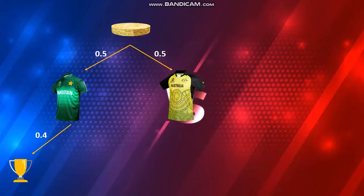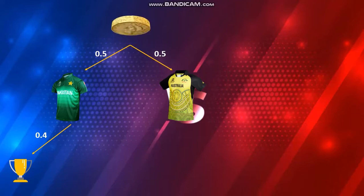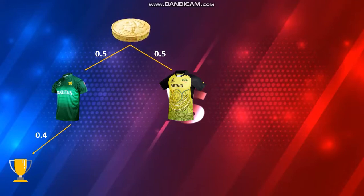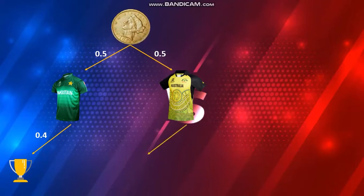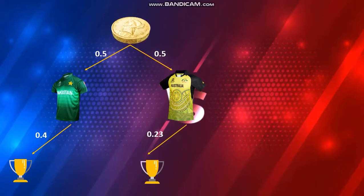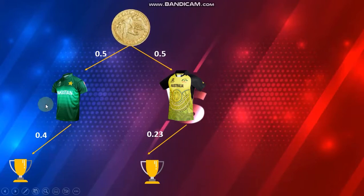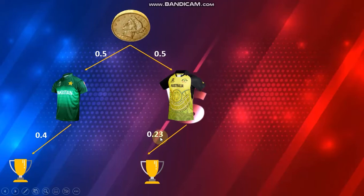Up to this point everything was clear, but to clarify what we did previously, we constructed another branch to avoid confusion. In this video, we illustrate the actual tree diagram concisely. If Pakistan loses the toss — meaning Australia wins the toss — the probability of Pakistan winning the match is 0.23. To avoid confusion: if Australia wins the toss, the probability of Australia winning is not 0.23; it is Pakistan's winning probability that is 0.23.